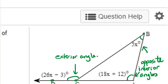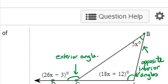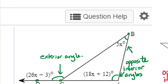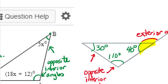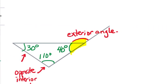Before we try to solve this problem and get into the algebra part, let's look at a more concrete example of a diagram like this one. So this is different — this is not for this problem; this is just to help us wrap our brain around the relationships between the angles. I have a similar situation: a triangle with one side extended, an exterior angle, and the two opposite interior angles marked.